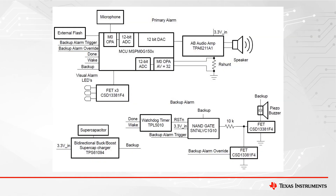Next, let's look at the full system block diagram that also includes a backup alarm circuit powered by a supercapacitor. When the system is connected to line power, the supercapacitor will charge by the TPS61094. If power is lost, this device will boost the supercapacitor's voltage to provide backup power. The loss of power will trigger the backup alarm piezo buzzer to play for the required three minutes. Because of the low power consumption of the MSPM0, the microcontroller can also be powered from the supercapacitor.